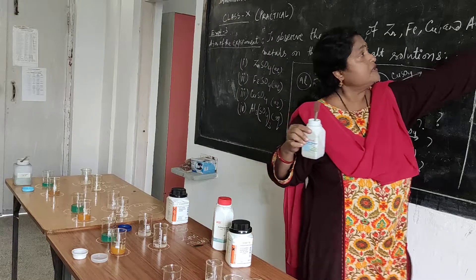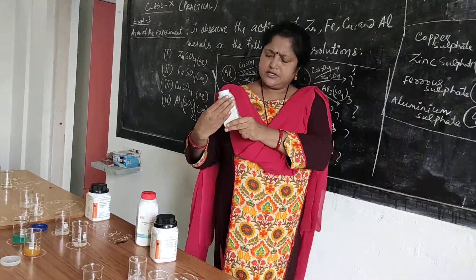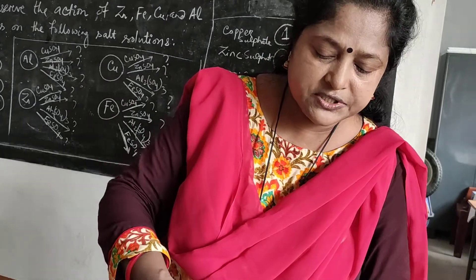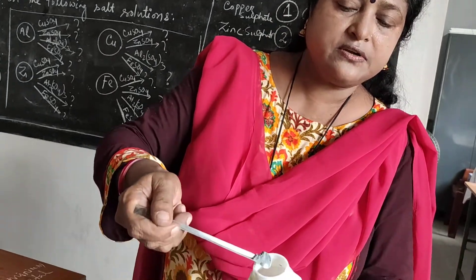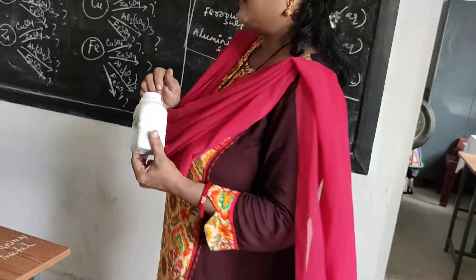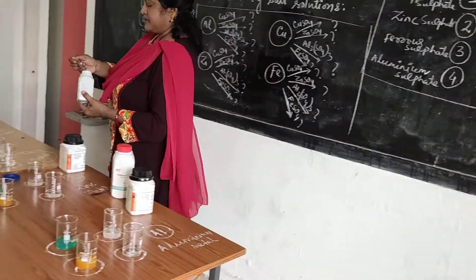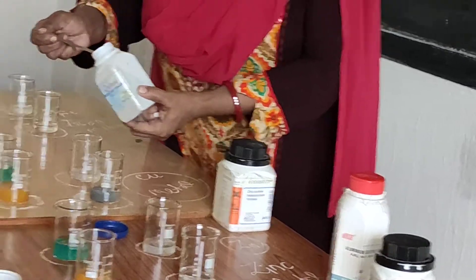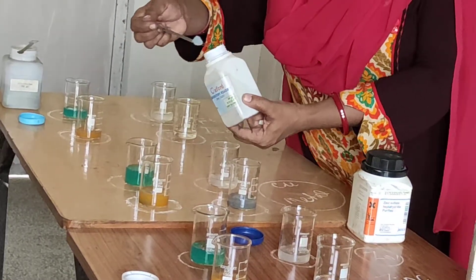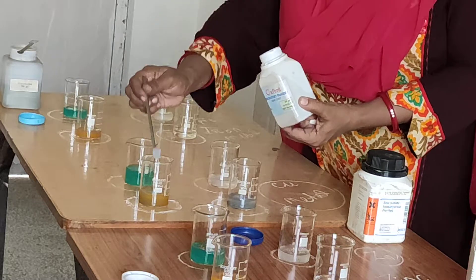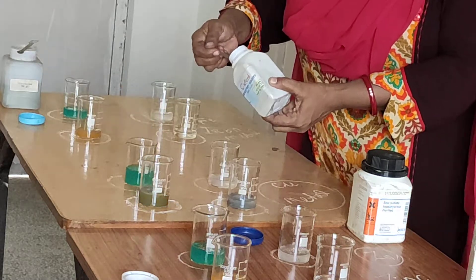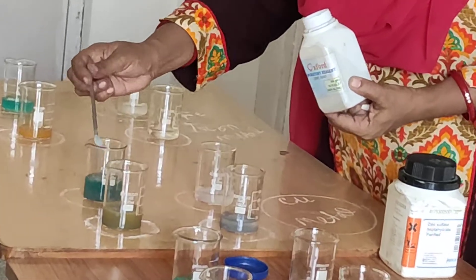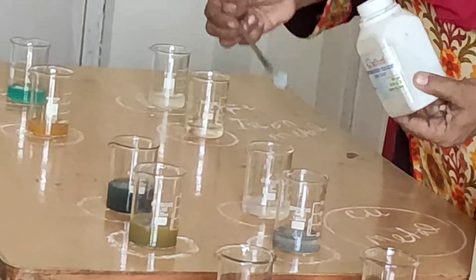The third table is your zinc. This is your zinc dust. I am adding zinc dust to all four beakers: 1, 2, 3, and 4.